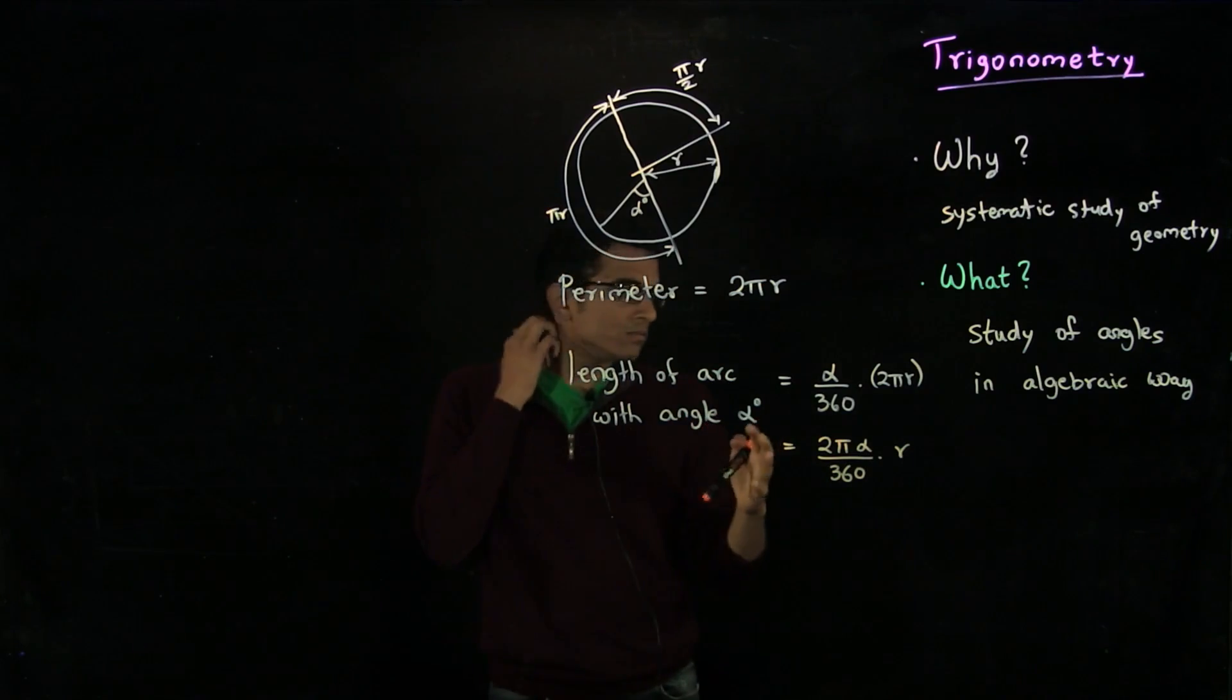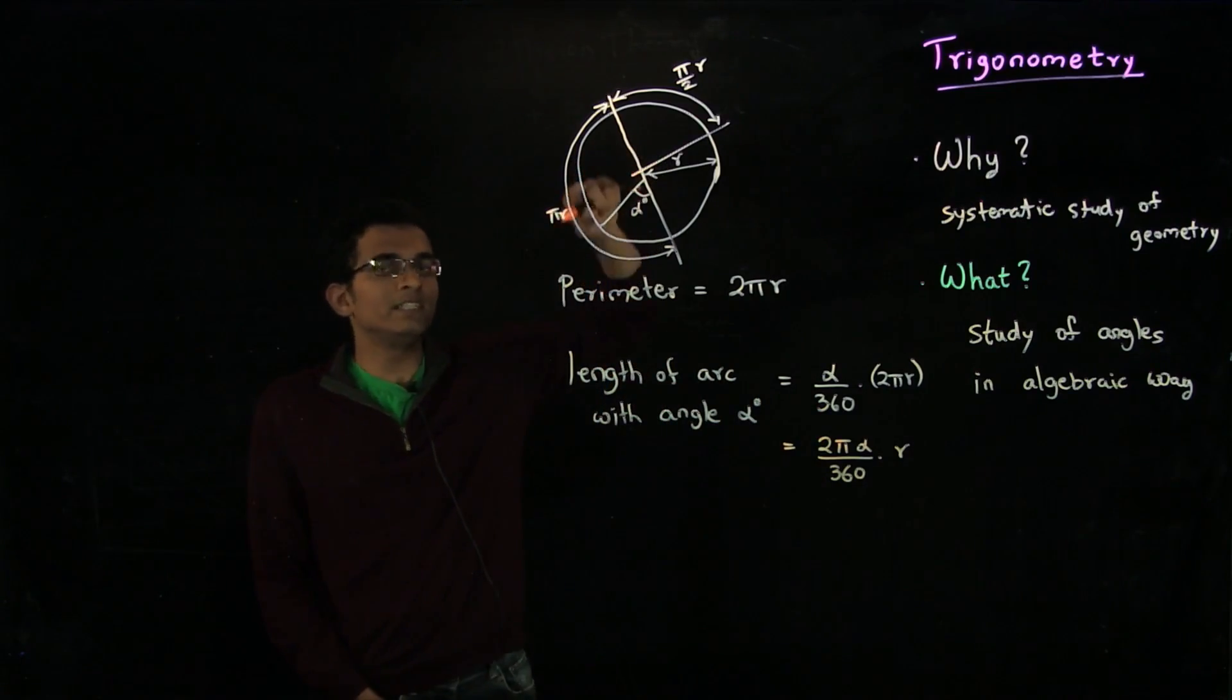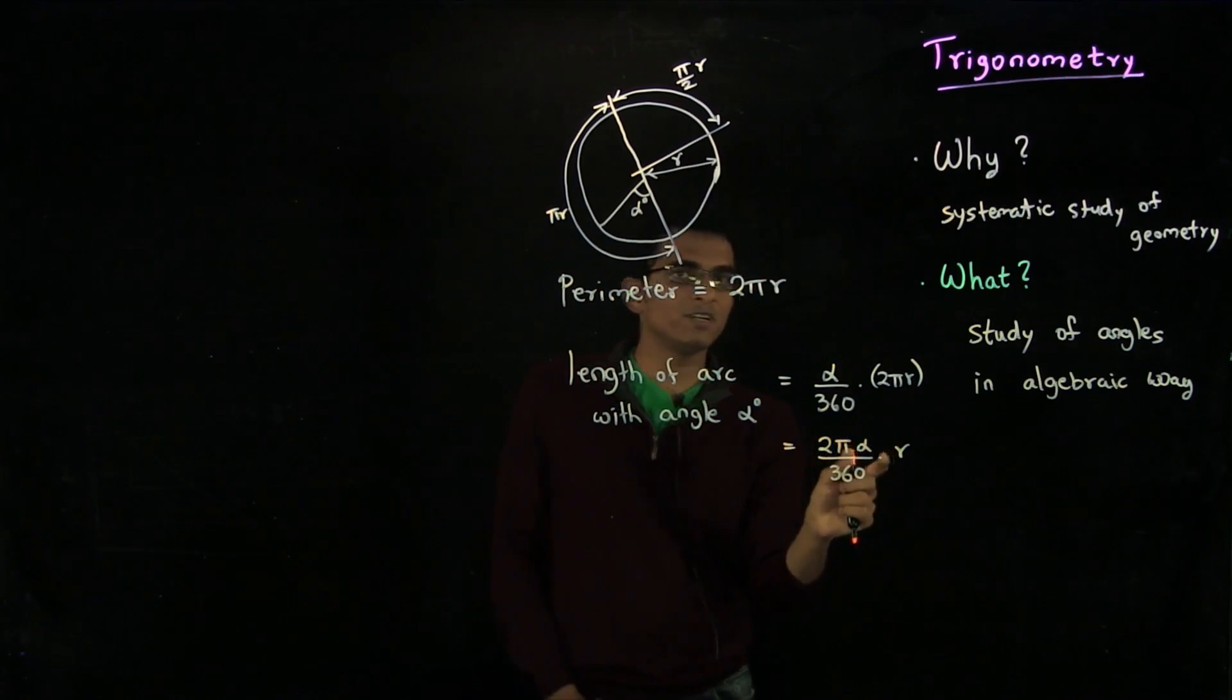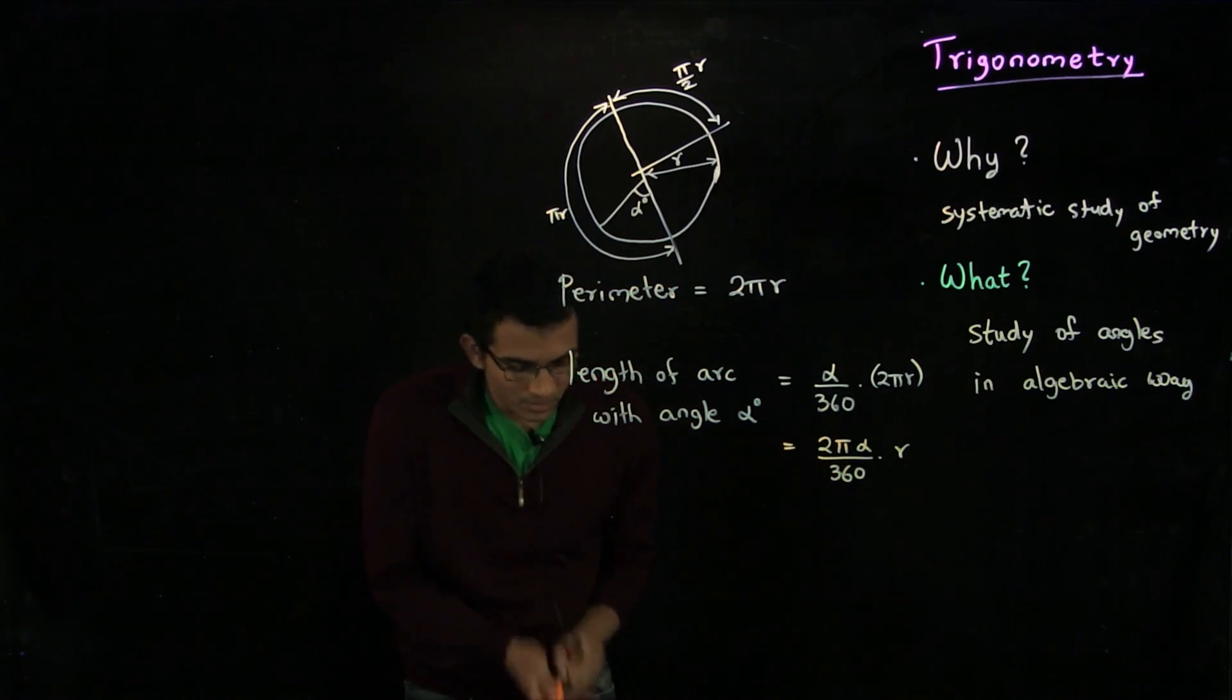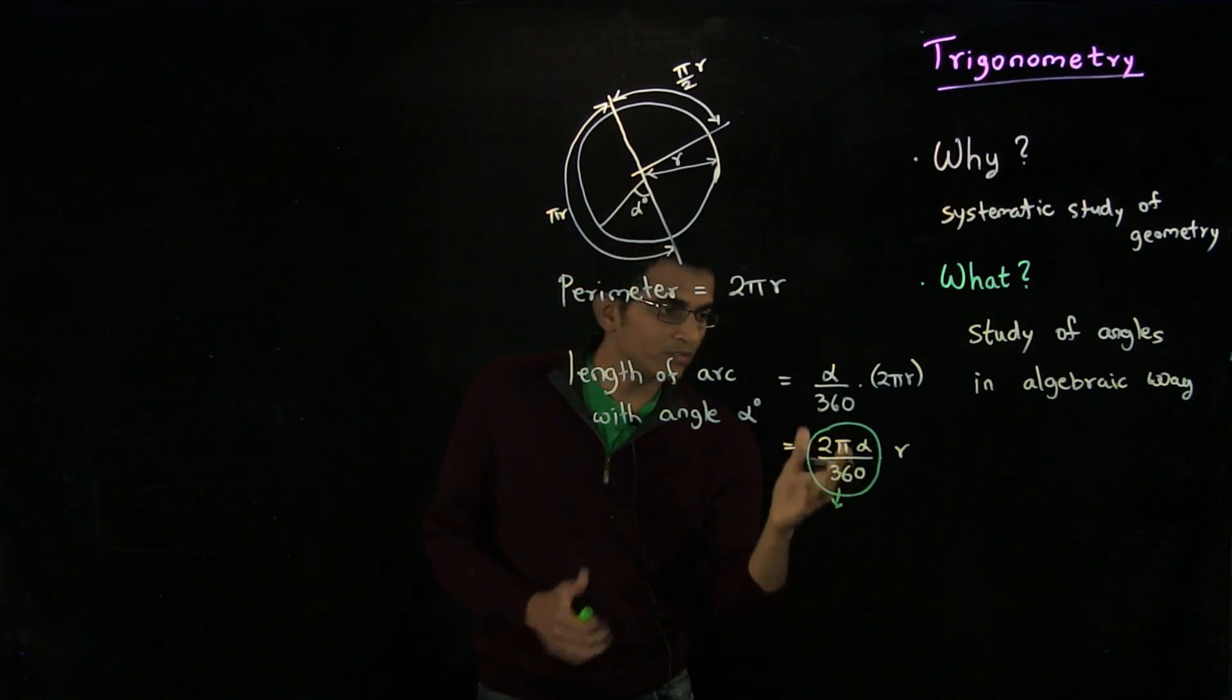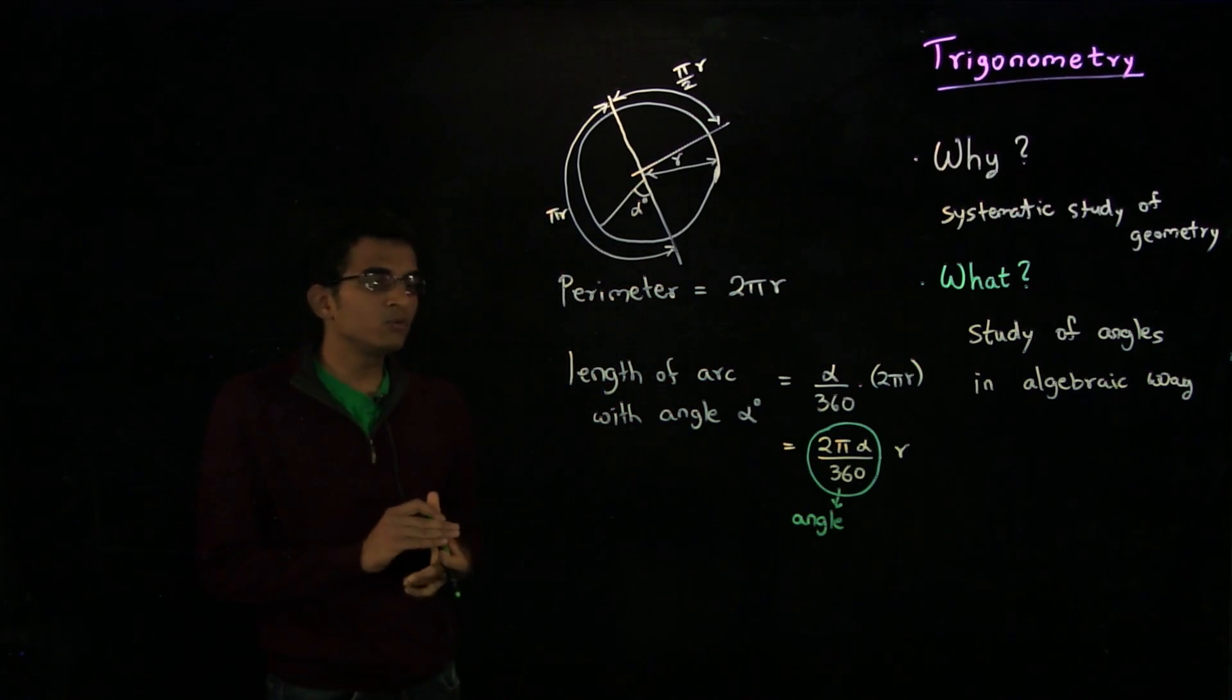We are more generally taught since school to think in terms of degrees. The full circle has 360 degrees. But now, when we want to write the length of an arc, we have to write this annoying expression, which is 2 pi alpha over 360 times r. It would be much nicer to call this expression 2 pi alpha over 360 as the angle itself, instead of alpha degrees. If we could define this quantity as the angle, then it would be much nicer.